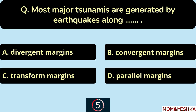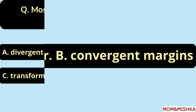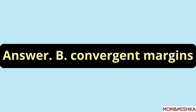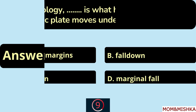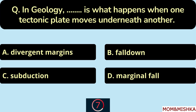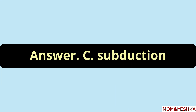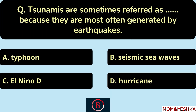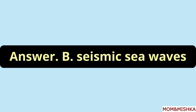Tsunamis are waves generated by all of the above — option D. Most major tsunamis are generated by earthquakes along convergent margins — option B. In geology, subduction is what happens when one tectonic plate moves underneath another — option C. Tsunamis are sometimes referred to as seismic sea waves because they are most often generated by earthquakes — option B.